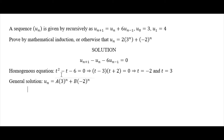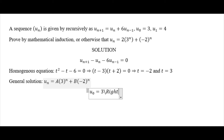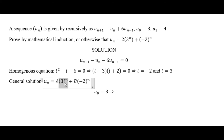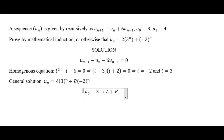Now we apply the initial conditions. The first condition is u(0) = 3. Substituting n = 0 into the general solution, both 3⁰ and (-2)⁰ equal 1, so we get A + B = 3. We call this equation one.